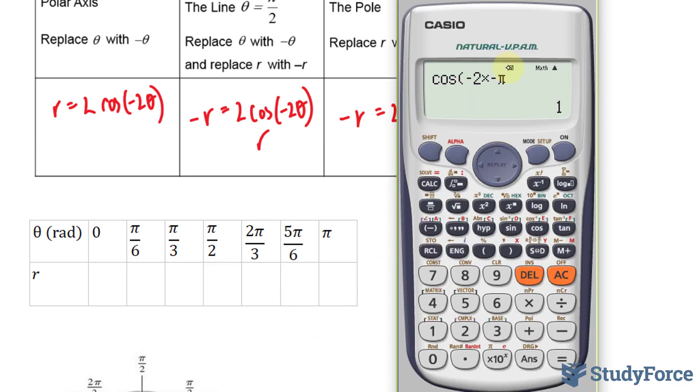Using our calculator, make sure that your calculator is in radians. We have 2 cosine 2 times 0. That gives us 2.